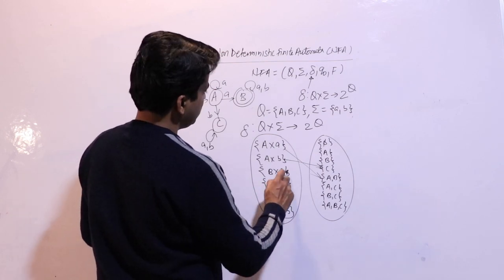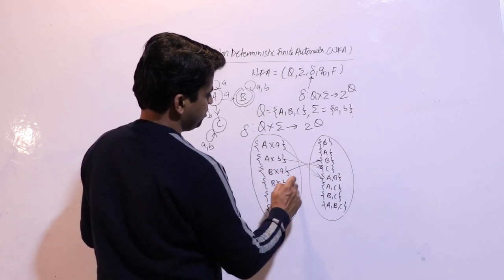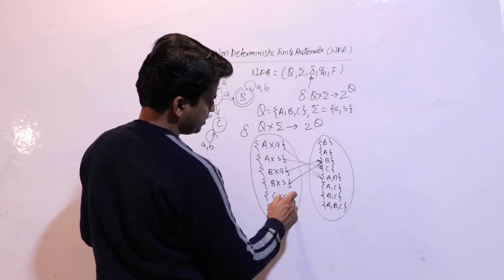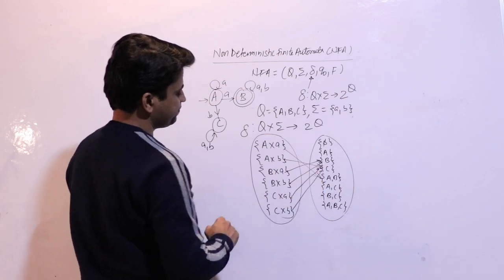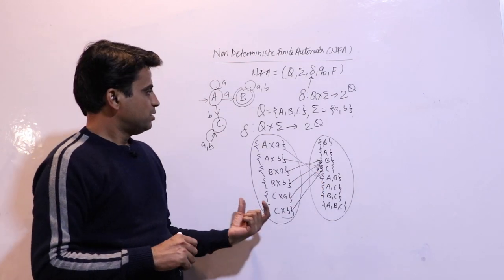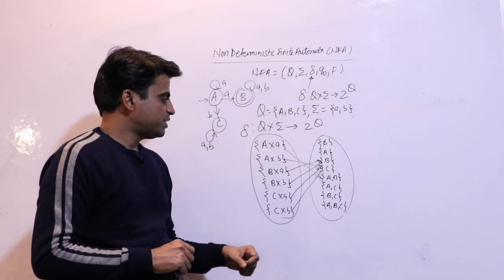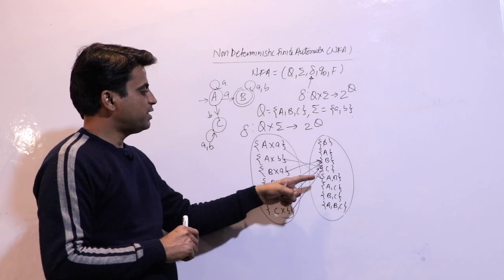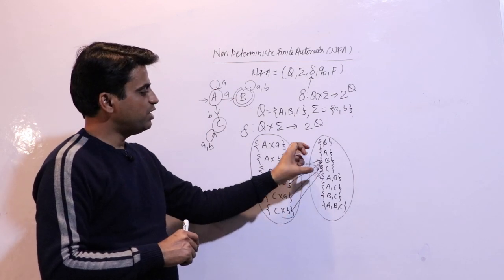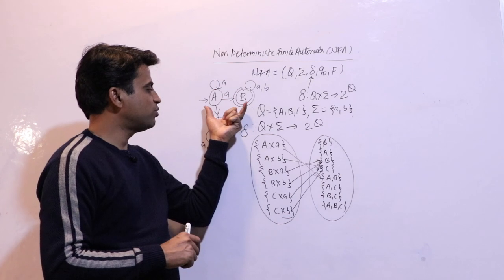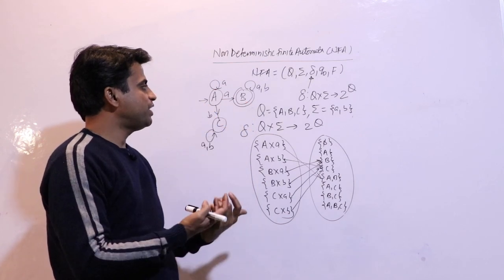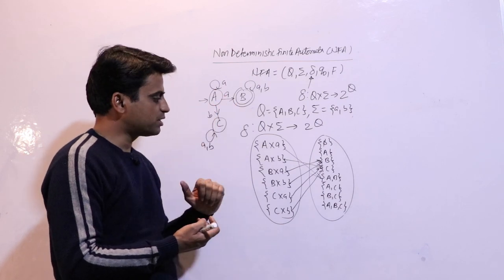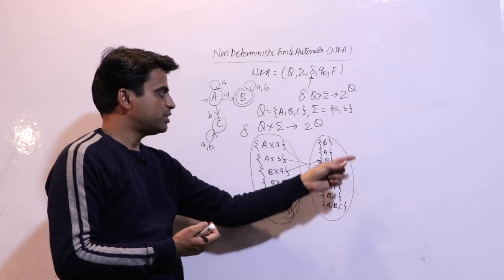For B with small 'a', the next state is B. For B with small 'b', the next state is B. For C with small 'a', the next state is C, and with 'b' the next state is C. So NFA's mapping function is Q cross sigma implies 2 to the power Q. You can see that the state AB is not allowed in DFA — in DFA only individual states A, B, C are allowed. The maximum number of states from A can be A, B, C — that is why it is 2 to the power Q.